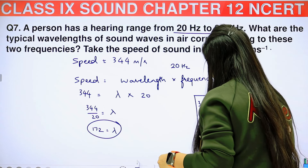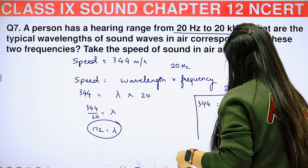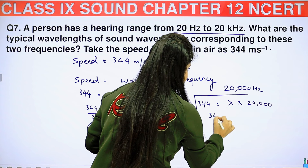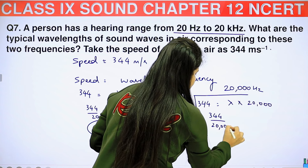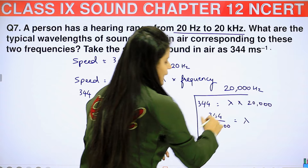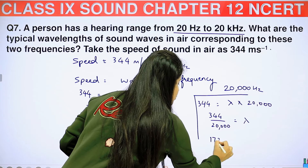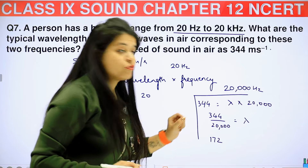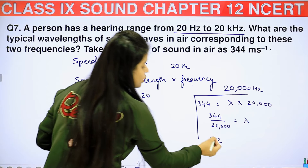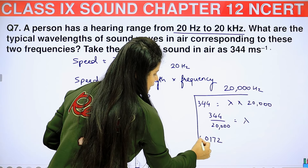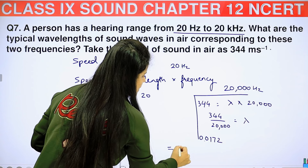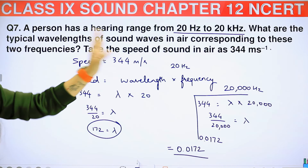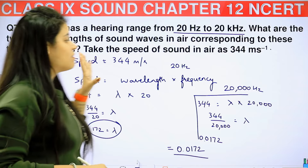For 20,000 Hz, the formula is the same: 344 equals wavelength into 20,000. So wavelength equals 344 divided by 20,000. Counting the decimal places — there are 4 zeros — so we place the decimal accordingly, giving us 0.0172 meters. This is our wavelength at 20,000 Hz.